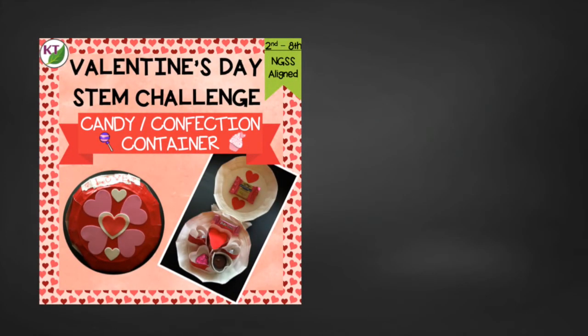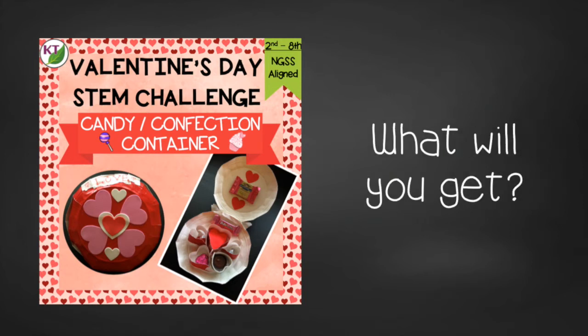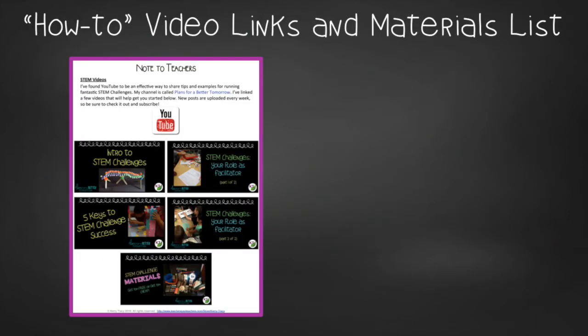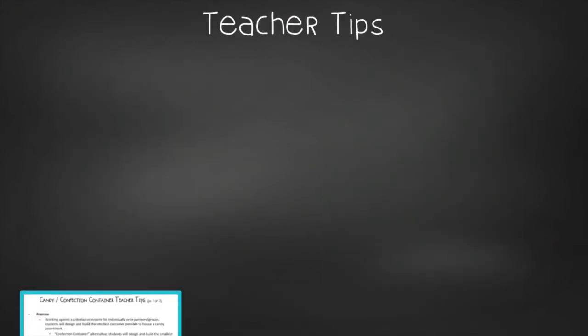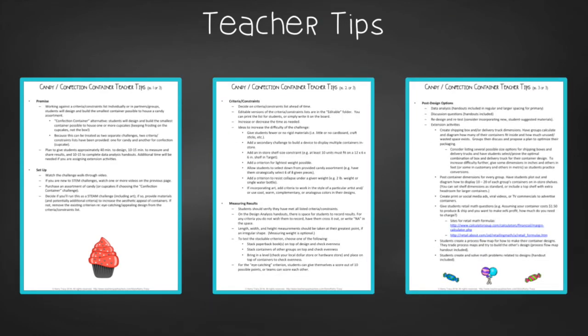I would urge you to check out the resource because there are a lot of time savers and extras in there. It contains everything you need, including modifications for use with second through eighth graders. You'll still need to gather the simple materials, but the hard parts are done. You'll get aligned Next Gen Science Standards, links to my STEM challenge how-to videos, the candy container materials list, teacher tips, premise and setup, how to increase or decrease difficulty through the criteria and constraints list, measuring results, and cross-curricular extension suggestions.